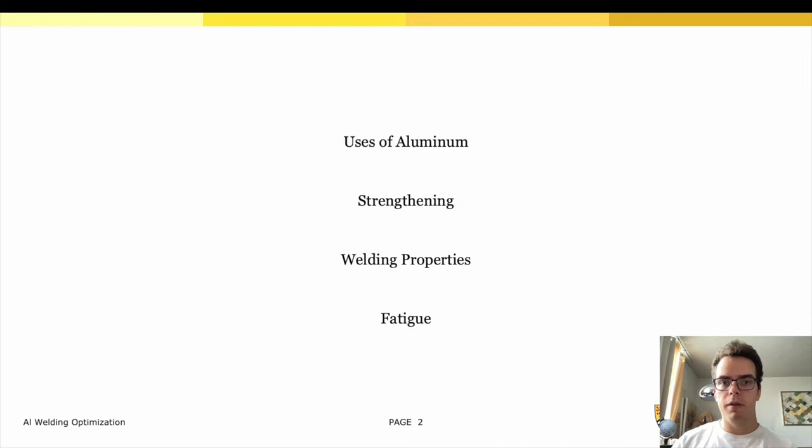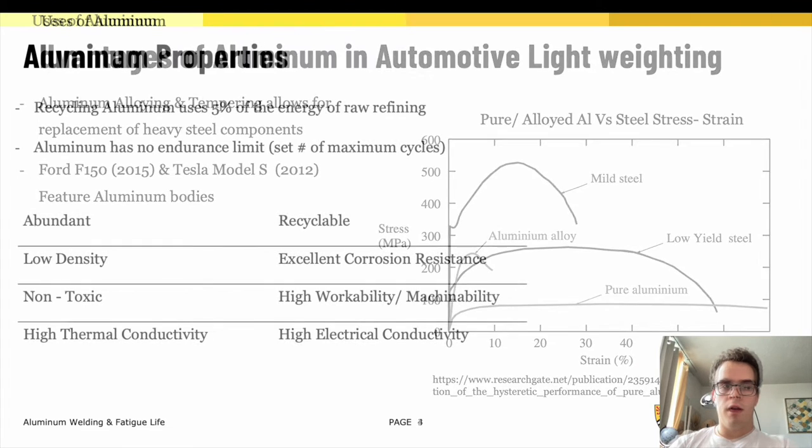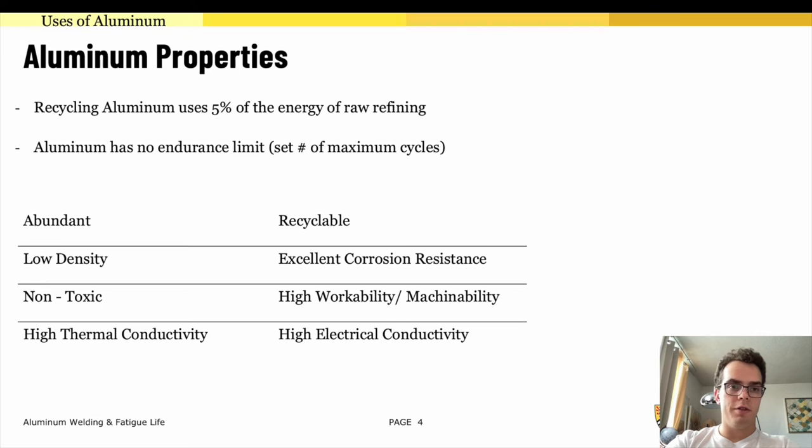Aluminum has recently become a competitive structural component to rival that of steel. Aluminum alloying and tempering allows for replacement of heavy steel components. We can see a trend of OEM manufacturers moving to aluminum for both outer panels as well as the full chassis structure, as seen with the Ford F-150 and Tesla Model S.